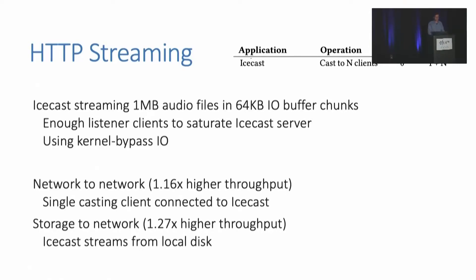Next we look at an HTTP streaming application in IceCast. IceCast streams audio over HTTP to a number of clients, but does not actually perform any application copies. However, we can still seek to eliminate I/O stack API copies. We compare only kernel bypass options and try to eliminate I/O stack API copies with Zeo plus I/O. We stream a one megabyte audio file in 64 kilobyte I/O chunks. In the network-to-network configuration, a network client streams data to a number of other clients enough to saturate the single IceCast server — we see a 1.16x higher throughput. In the storage-to-network case, IceCast reads data from a file and sends it out over the network, achieving up to 1.27x higher throughput.